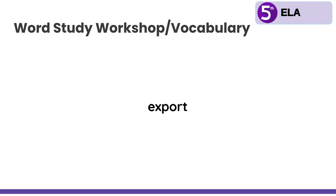Our third word is deform. First I want you to look for one of those Latin roots. Hopefully you see the root form right here. Remember, form means to shape — it has to do with the shape of something. So to deform something means to shape something incorrectly; it means something is wrong with something's shape. If I am baking cookies and I roll out my cookie dough and use a cookie cutter to cut them out, but I accidentally mess up one of the cookies, then I have deformed that cookie because the shape of it is wrong compared to the other cookies.